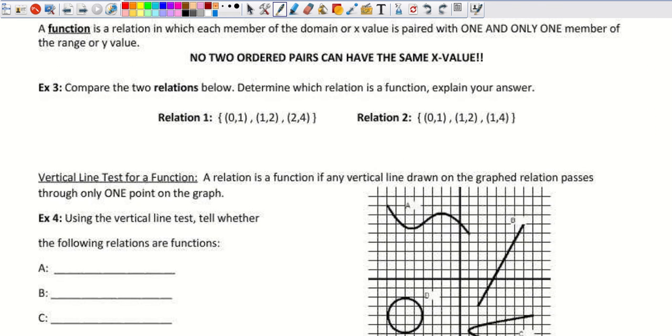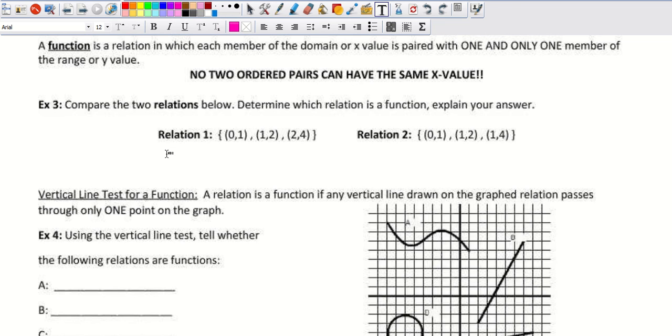So a function is a relation in which each member of the domain or x value is paired with one and only one member of the range. So no repeated x values. So compare, which is a function, explain your answers. Try this one on your own, see what you guys can come up with. Also, is it one-to-one? Pause it. Do your thing.